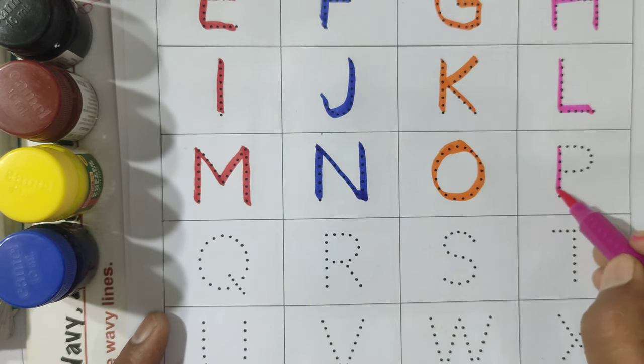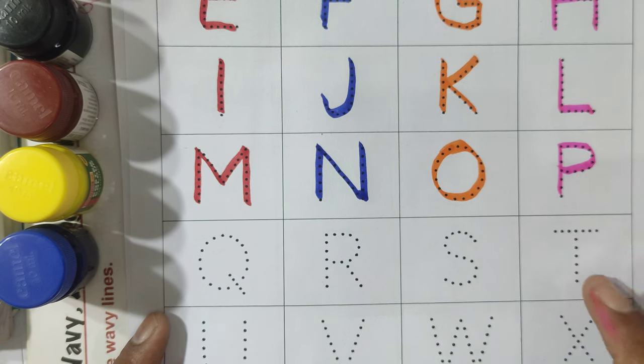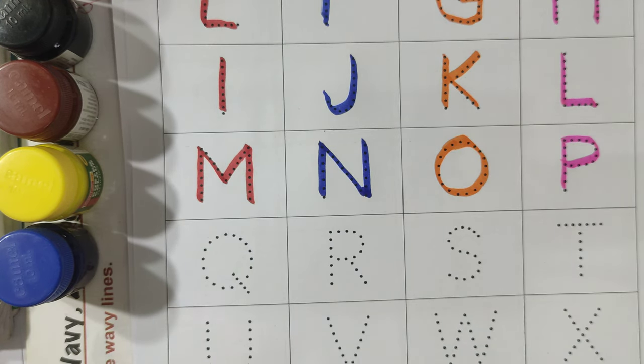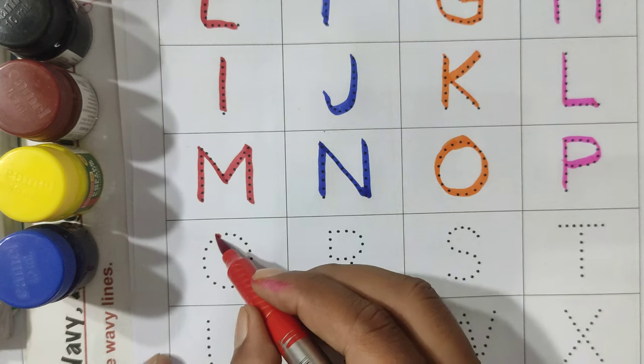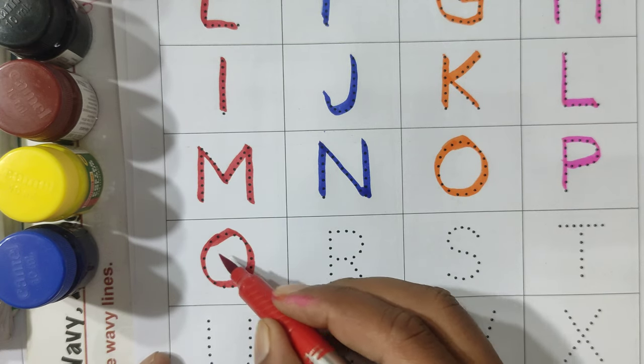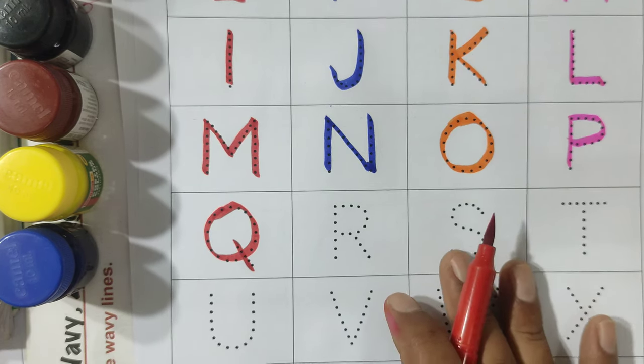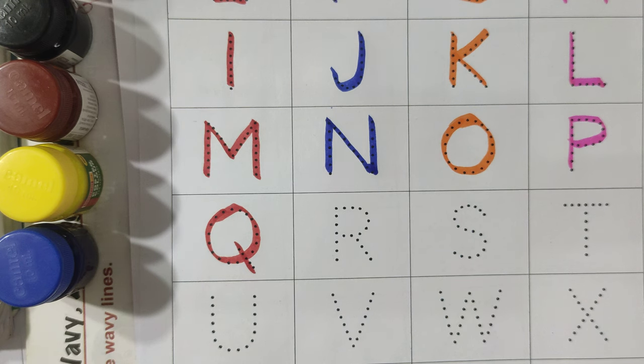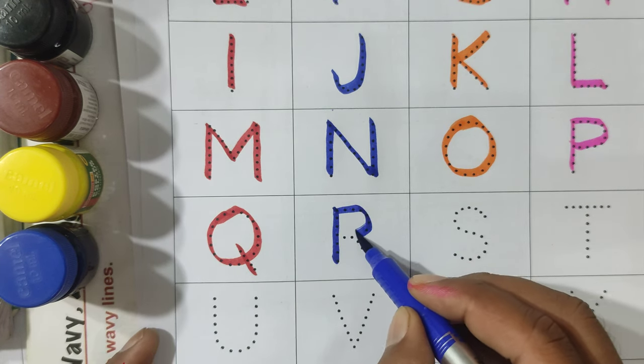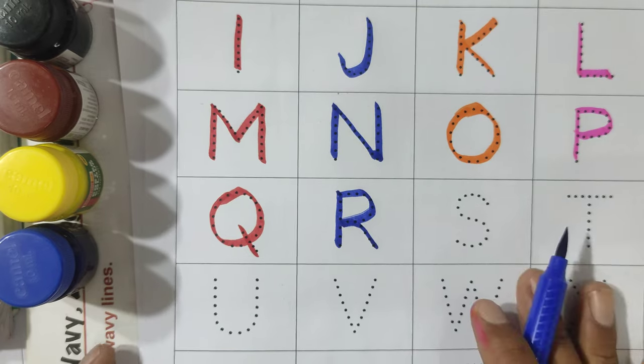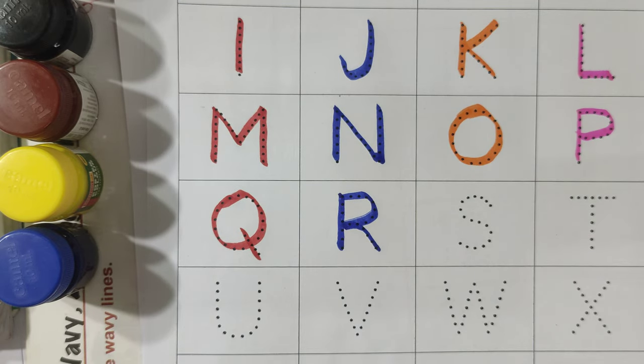P, P for Parrot. Parrot means Tota. Q, Q, Q, Q for Queen. Queen means Rani. R, R for Rabbit. Rabbit means Khargosh.